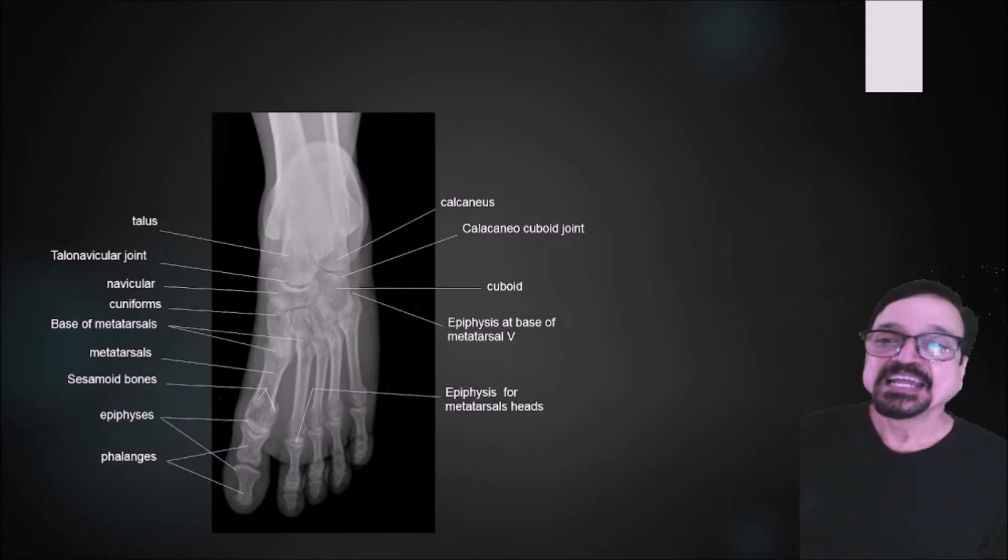If you see, only the metatarsals are seen well. Tarsals are not seen well. For that we have to go for the oblique projection, but we can see certain bones well. That one thing is navicular, so accessory navicular bone, if it is present, is best seen in AP projection. That's one of the indications.